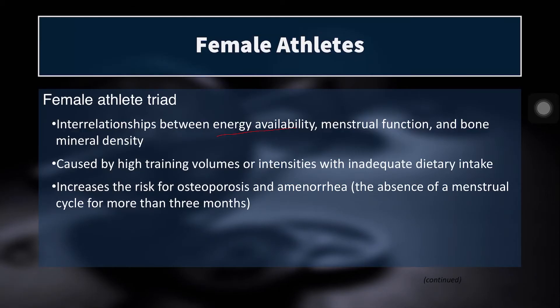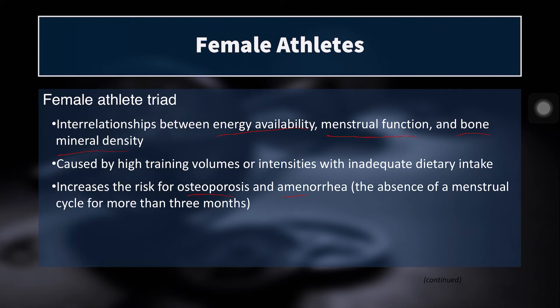When coaching female athletes we also really want to consider the female athlete triad, because we want to spot any indicators early and get our athletes on the right track. This is the interrelationship between energy availability, menstrual function, and bone mineral density. It can be caused by high training volumes, high intensities, or both, combined with inadequate dietary intake. This increases the risk for not only osteoporosis but also amenorrhea — the absence of the menstrual cycle for three or more months.